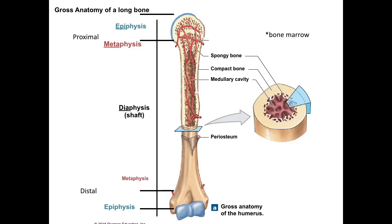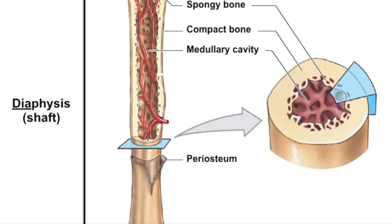The shaft is called a diaphysis. There's also a hollow cavity called the medullary cavity, which is filled with bone marrow but also contains a lot of blood vessels and nerves running through it.